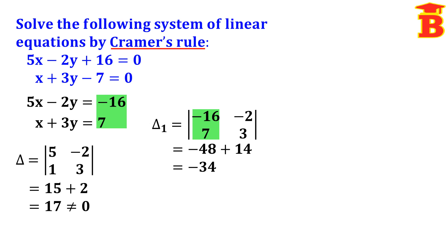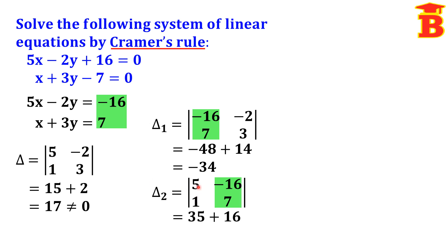Next we find del 2. Del 2 means replace the second column by the constants minus 16, 7. The first column remains 5, 1. Expanding: 5 into 7 is 35, minus of minus 16 gives plus 16, so del 2 equals 51.